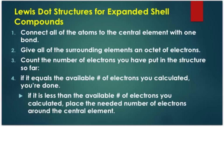Drawing Lewis dot structures for expanded shell compounds is similar to ordinary covalent compounds. We follow the same steps up to step three. If the electron count equals the number of available electrons, we're done. If it is less than the available electrons, we place the remaining electrons around the central atom. The examples will make this clearer.